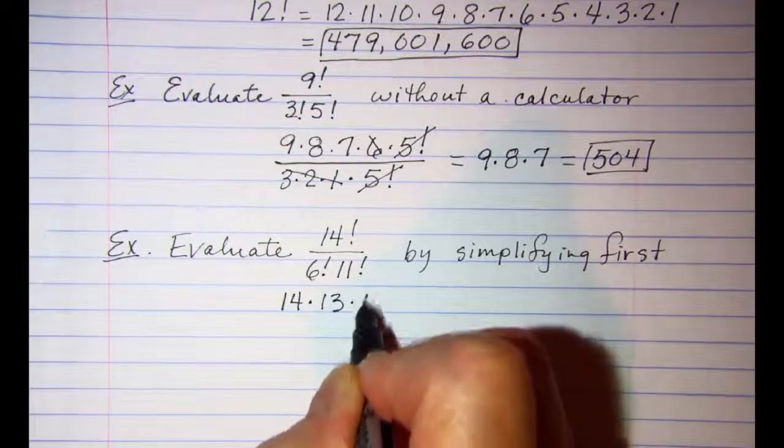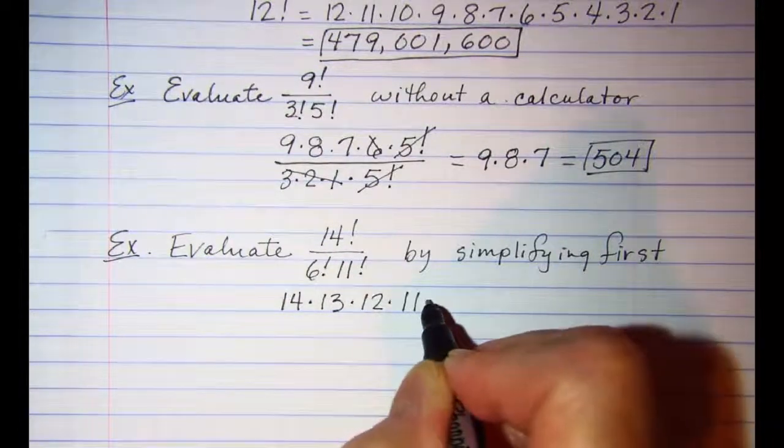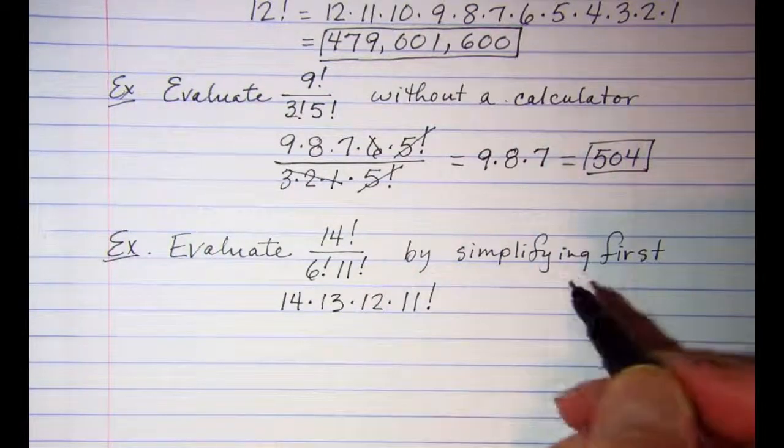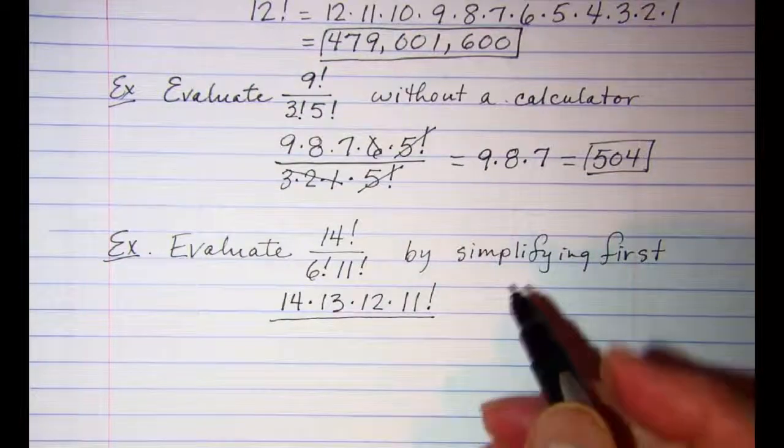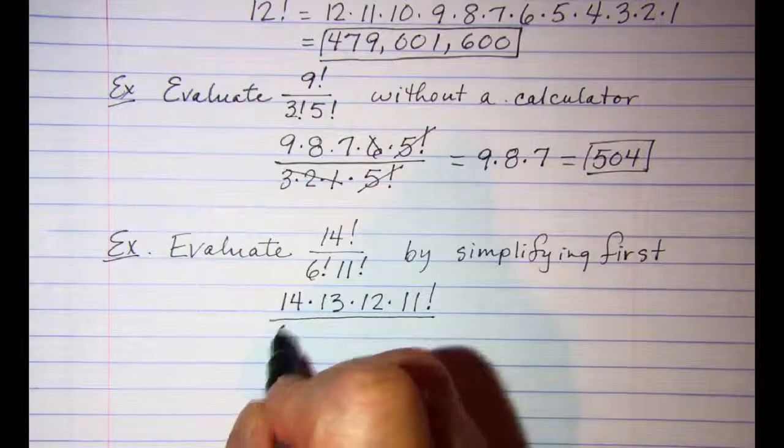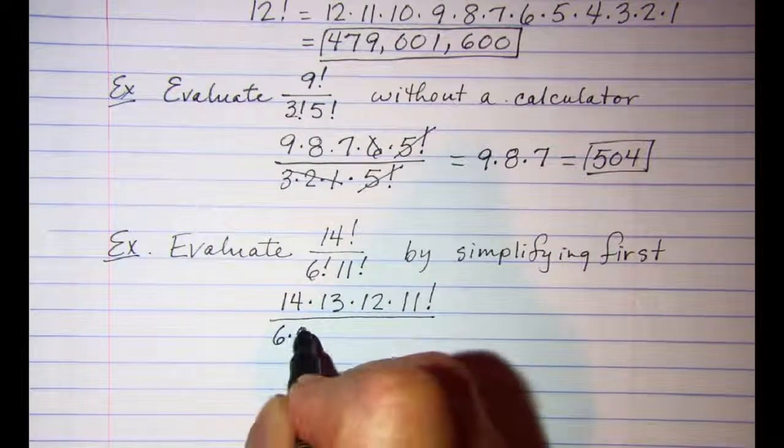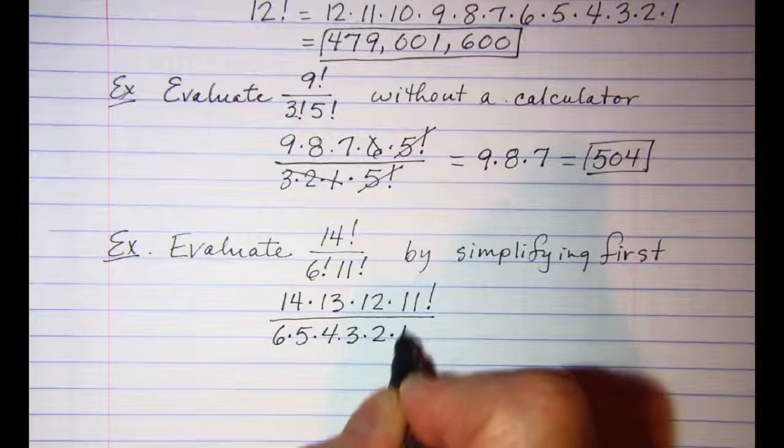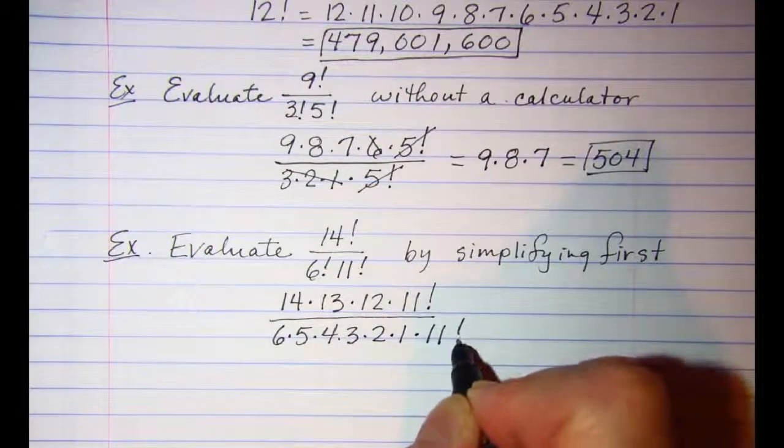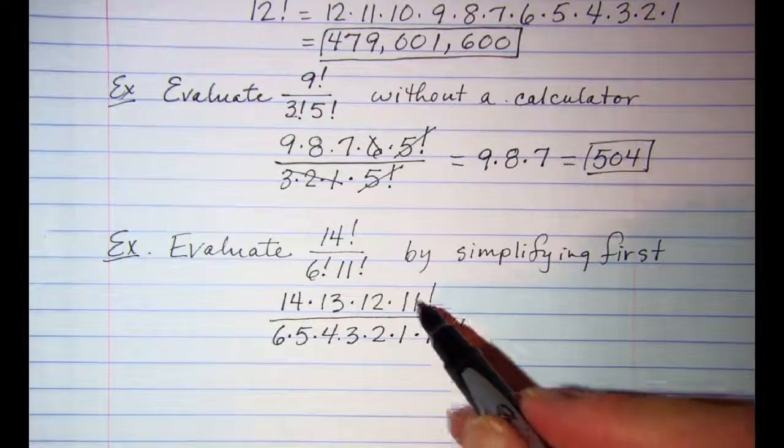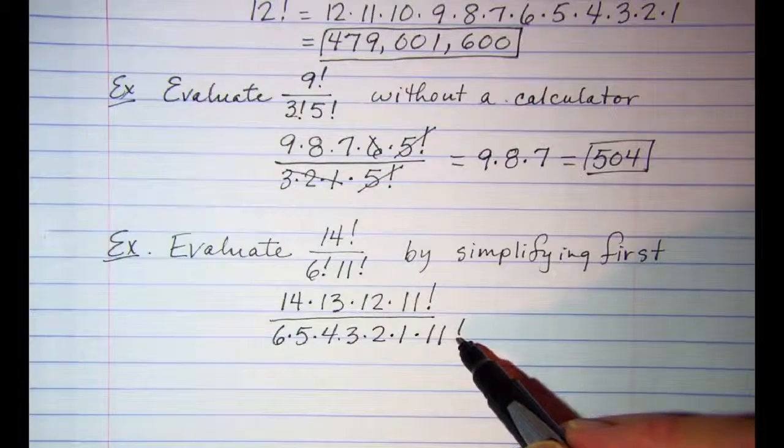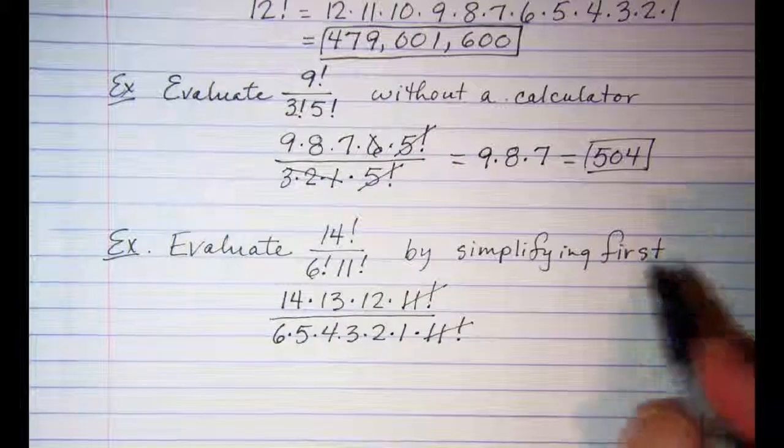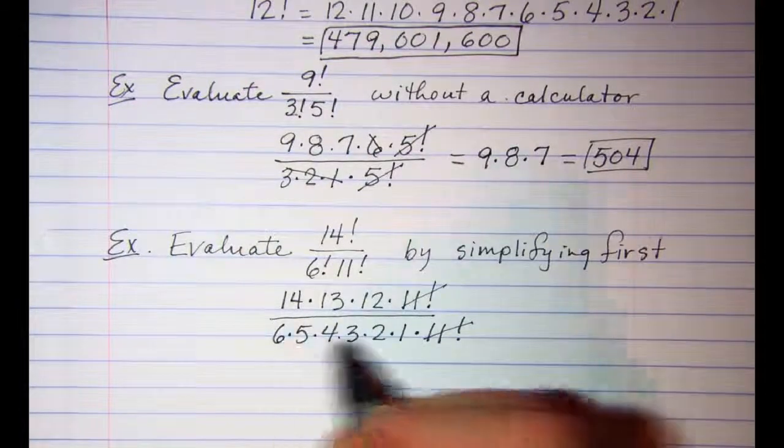I'm going to write my 14! expanded until I hit the 11, so 14 × 13 × 12 × 11, and then instead of continuing I'm just going to write that as 11!. And then in the bottom I have 6 × 5 × 4 × 3 × 2 × 1 × 11!.